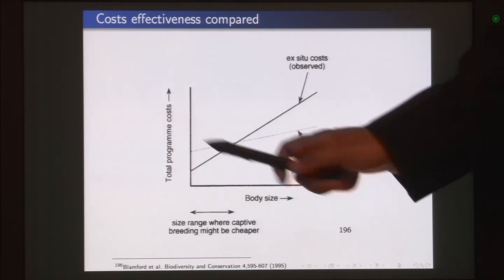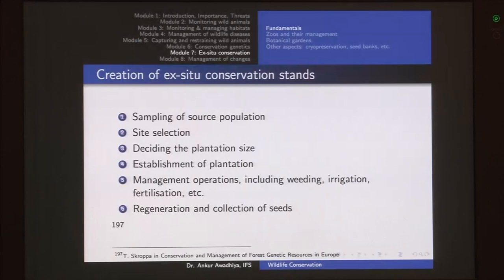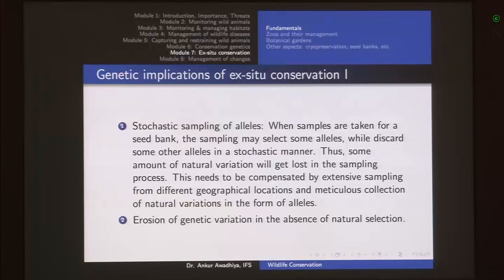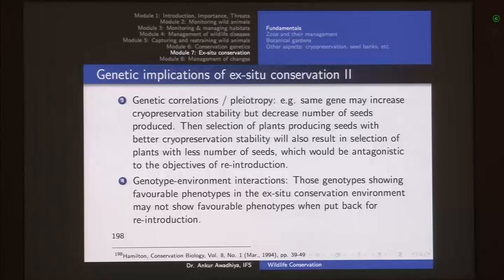Creation of ex-situ conservation stands has genetic implications: stochastic sampling of alleles means you are keeping only a small subset of the population, so a number of alleles and variations may be lost. There is also erosion of genetic variation in the absence of natural selection in ex-situ facilities. Genetic correlations and pleiotropy mean that selecting for one characteristic may co-select another. Finally, genotype-environment interactions mean that organisms surviving best in ex-situ environments may not survive well when reintroduced into the natural environment.